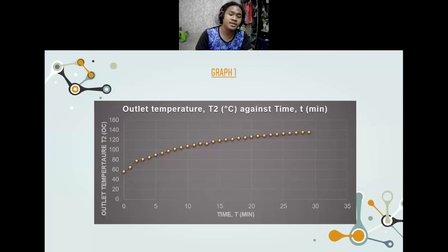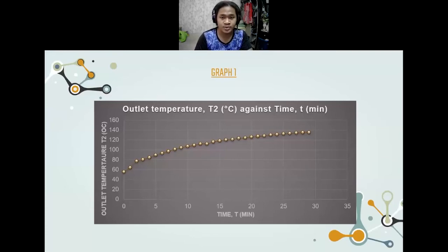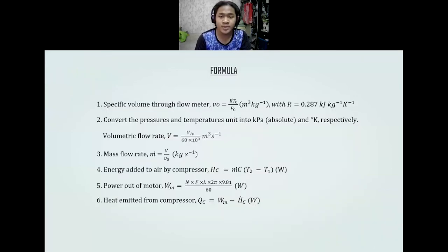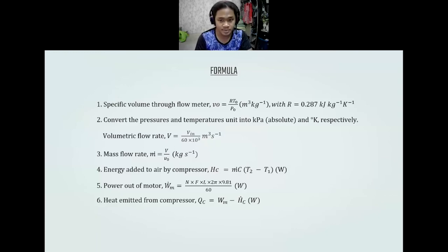The graph shows a slight increase and at the end becomes horizontal. The formulas used in this experiment are: number one, specific volume through flow rate; number two, convert the pressure and temperature into kilopascal absolute and Kelvin respectively — we need to convert Celsius to Kelvin.